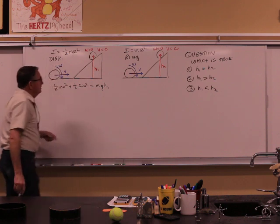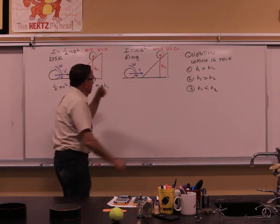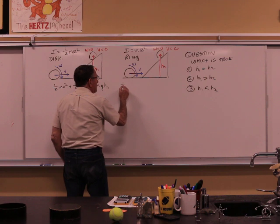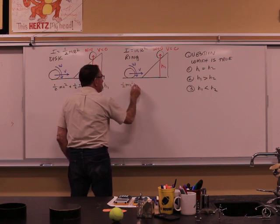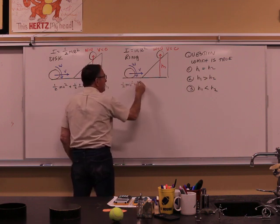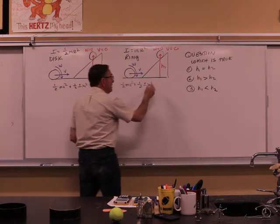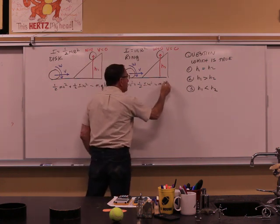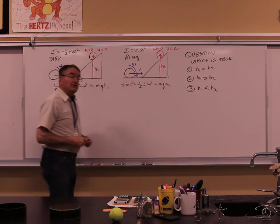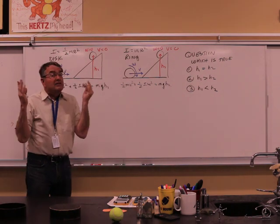There is an equation for this one. For this one we have the same idea. One half mv squared linear kinetic, one half I omega squared rotary kinetic goes to mgh2. Let's go find out which one is more.